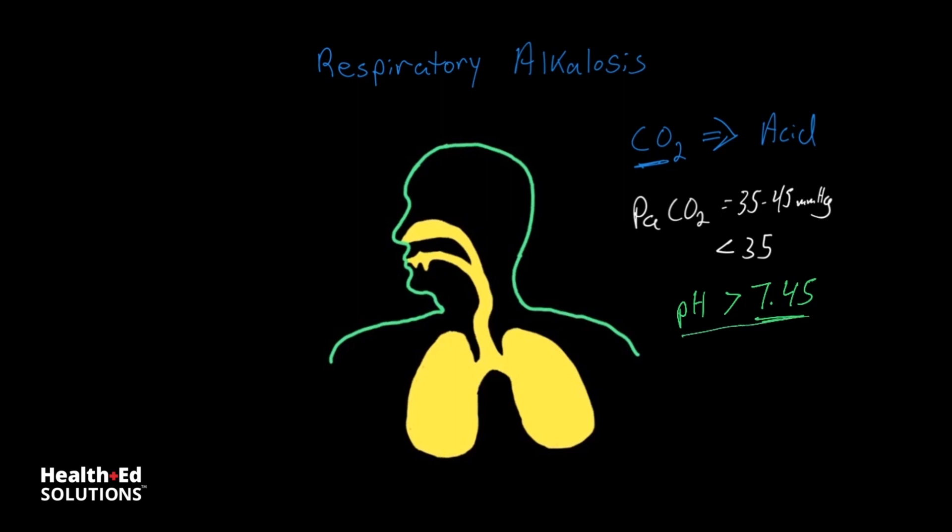and we have a pH that is greater than 7.45, which means we have an alkalosis. The pH greater than 7.45 means we have an alkalosis. And the fact that we have a PaCO2 of less than 35 means that it is a respiratory alkalosis because the volatile acid in the blood that is CO2 is lower than it should be.